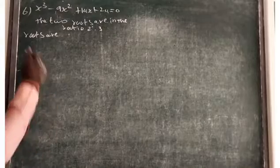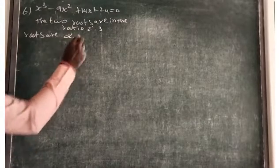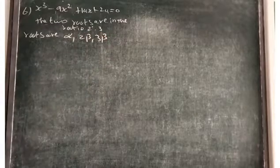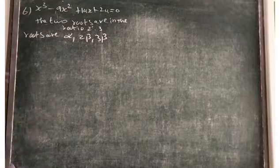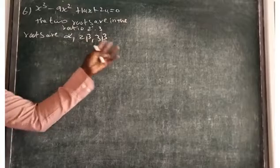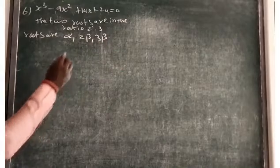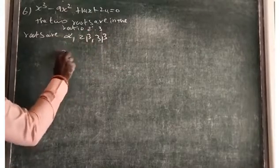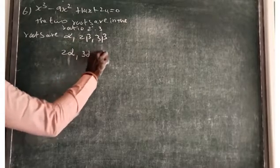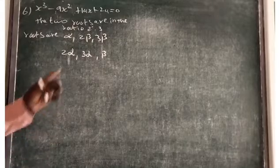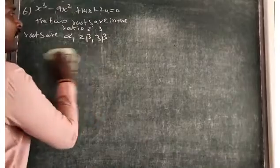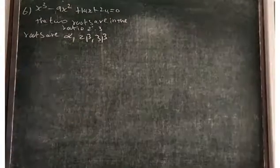How to select the roots? The roots can be taken as alpha, 2 beta, and 3 beta. Instead of using alpha, beta, gamma individually, because of the ratio condition you can write them this way. You could also write 2 alpha and 3 alpha with gamma — any one combination works, as long as any two roots satisfy the ratio of 2 is to 3.